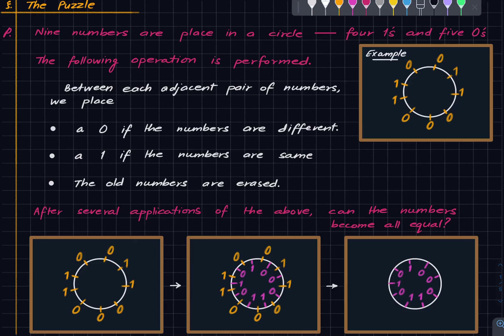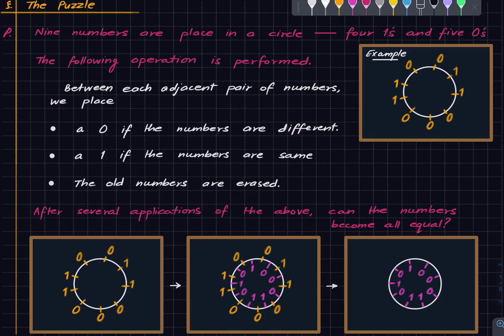What we are asking is: after several applications of this operation, starting with some given configuration, can all the numbers become equal? Can it possibly happen? That is the question. You are encouraged to pause the video and try to find a proof or solution yourself before looking at what I am going to discuss.